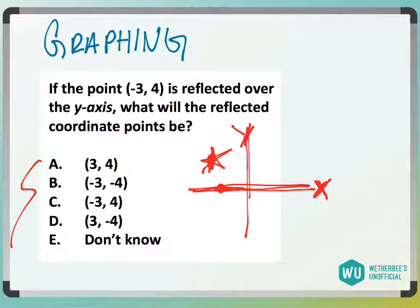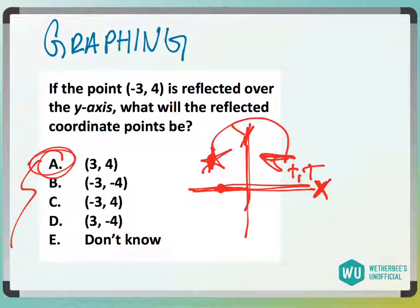So if it's reflected over the y-axis, which is this, it's going to go over here. That is going to be positive, positive, which the only answer choice that has positive, positive is answer choice A.